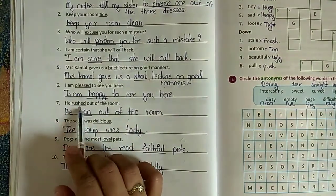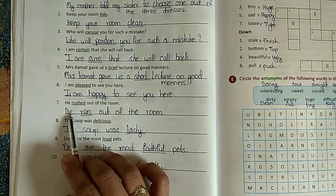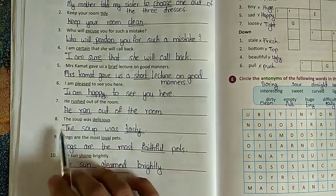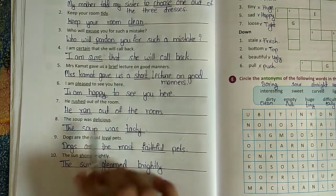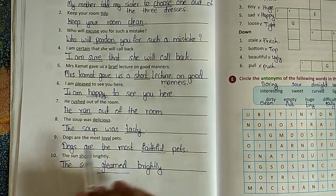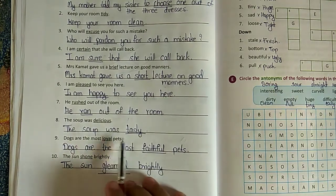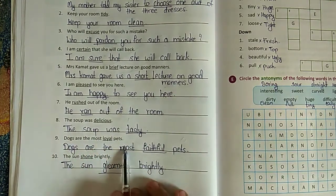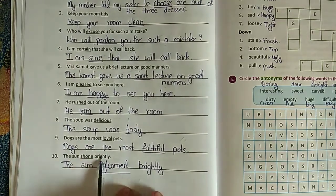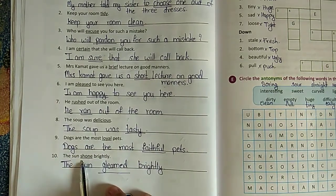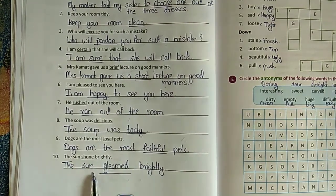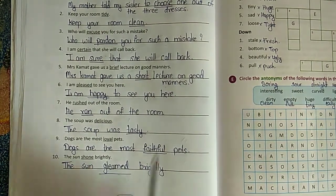Seventh: he rushed out of the room - he ran out of the room. Rushed became ran. The soup was delicious - the soup was tasty. Delicious became tasty. Dogs are the most loyal pets - dogs are the most faithful pets. The sun shone brightly - the sun gleamed brightly. So this is how you have to do your exercise by changing the words with their synonyms using the help box.